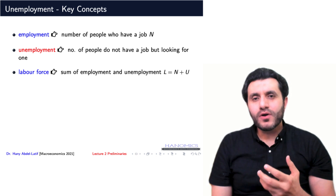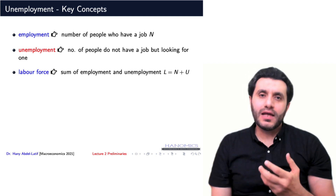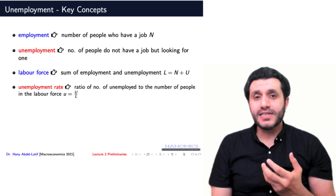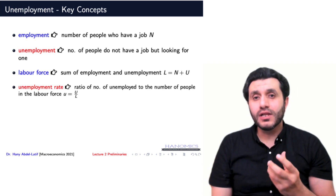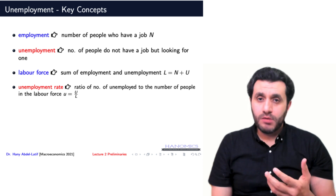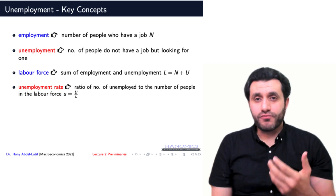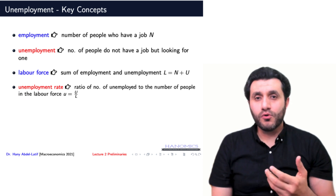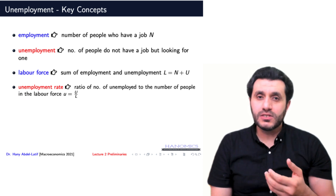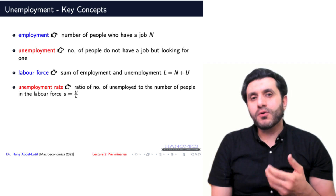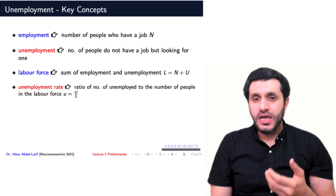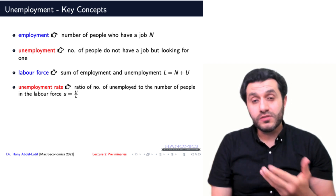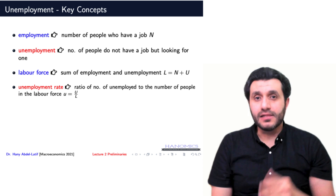Let's now look at how we calculate the unemployment rate, denoted as small letter u. The unemployment rate is the ratio of the number of unemployed individuals to the number of people in the labor force, or U divided by L.